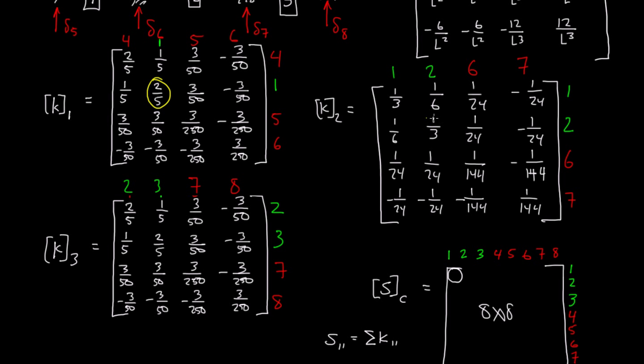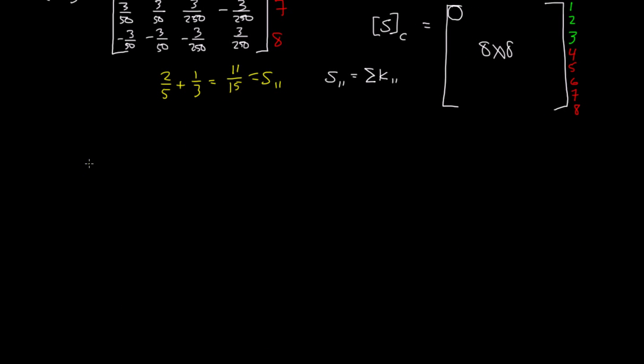For K1, we have row 1, column 1, which says 2/5 here. Then we move on to K2. We also have a 1,1 here, which is 1/3. Then we move on to K sub 3 and look for 1,1. In this case, there is no 1,1 here. So we add 2/5 plus 1/3, which gives us 11/15. That is equal to S sub 1,1.